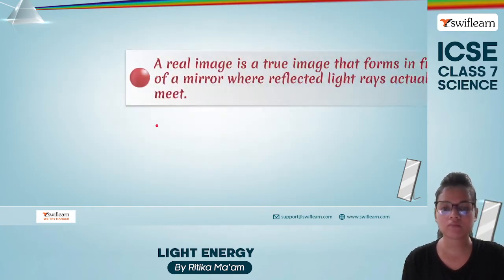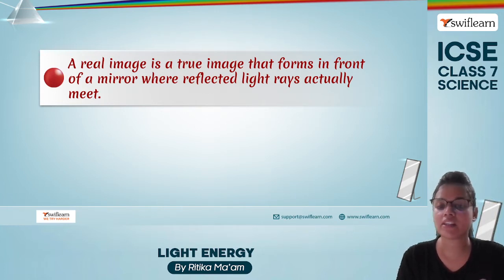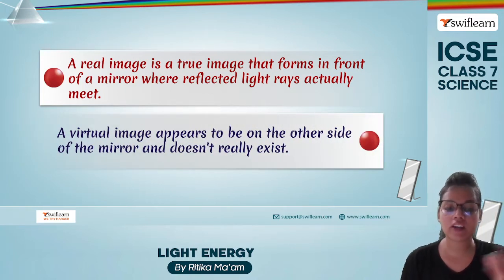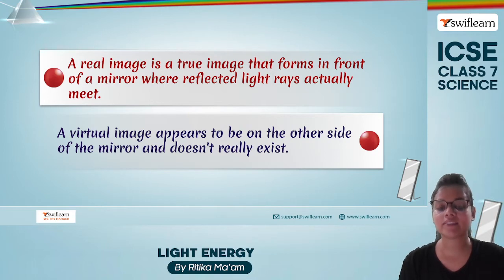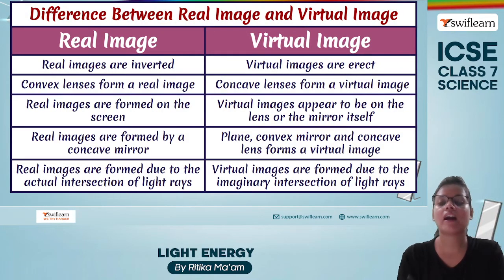Talking about the types of images, we have two types — real and virtual. A real image is a true image that forms in front of a mirror when the reflected rays are actually meeting at a point. A virtual image appears to be on the other side of the mirror, and that image actually doesn't really exist.